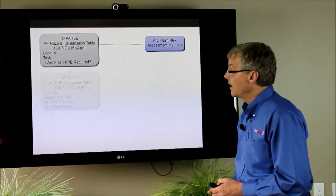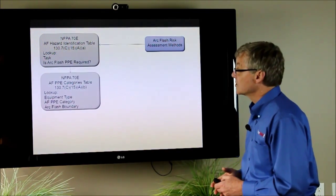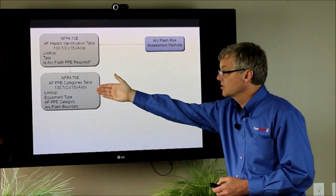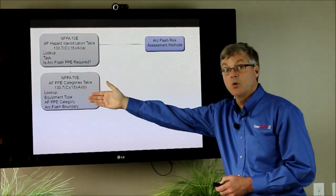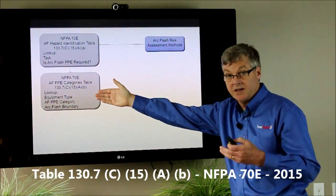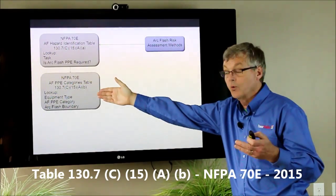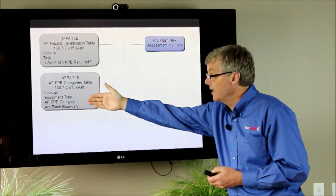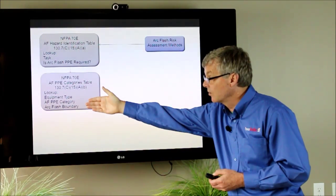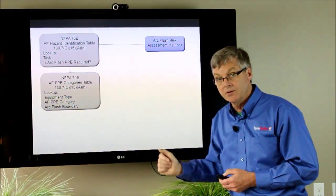Once you find out that yes there is arc flash PPE required, then you go to what's called the arc flash PPE categories table and you look up the equipment type that you're working on. So the type and piece of equipment you're working on based on also voltage as well. And then you look and it'll tell you what the arc flash PPE category is and what the arc flash boundary is.